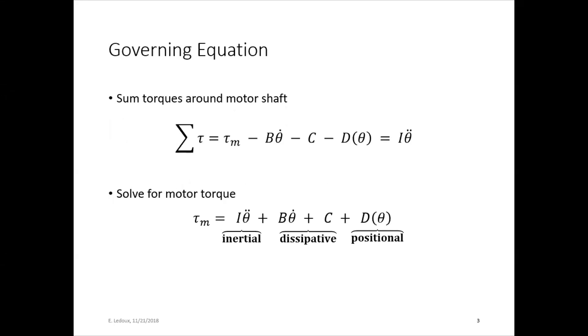This is a governing equation for it. So sum the torques around the shaft with the motor. Then we'll have motor torque minus Bθ̇ minus C minus D(θ) equals Iθ̈. So this moment of inertia times angular acceleration. Then we'll talk about each one of these terms.